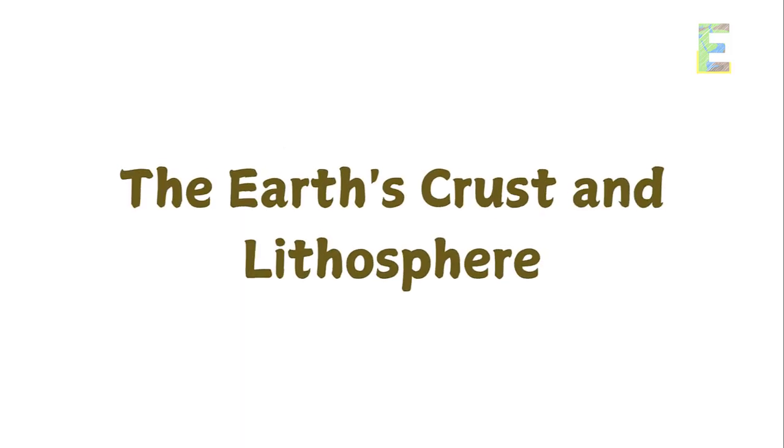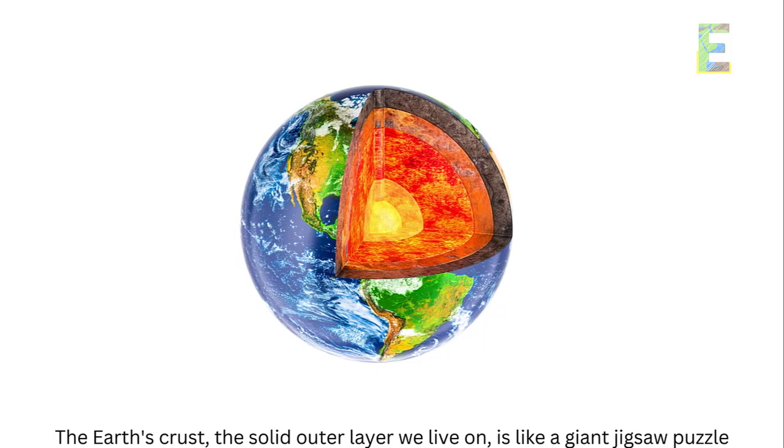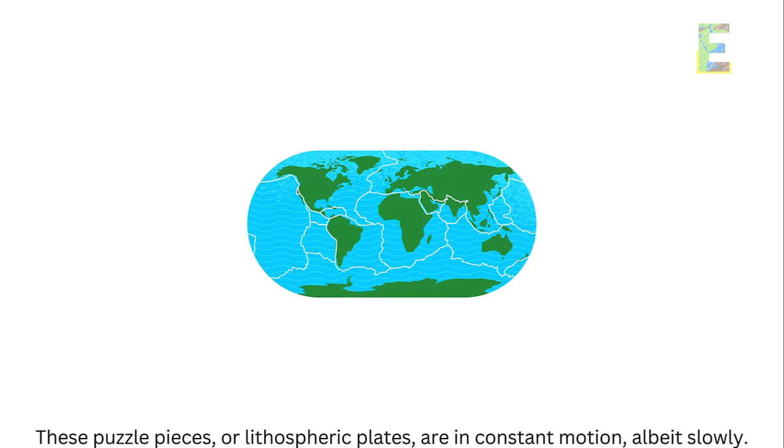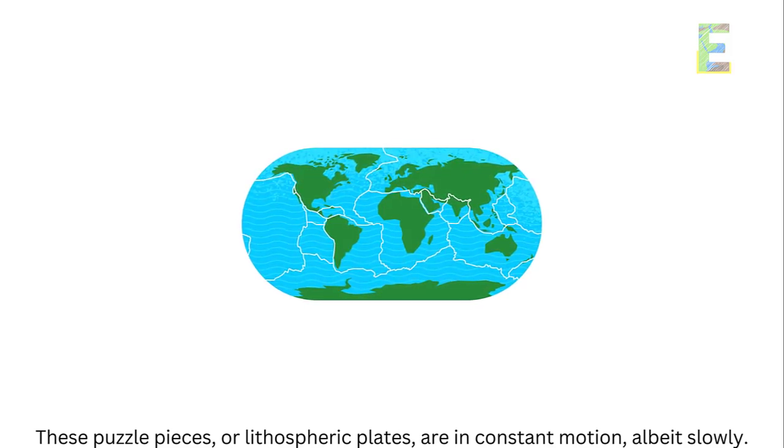The Earth's crust and lithosphere. The Earth's crust, the solid outer layer we live on, is like a giant jigsaw puzzle. These puzzle pieces, or lithospheric plates, are in constant motion, albeit slowly.